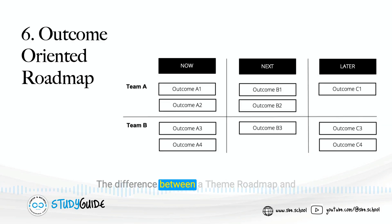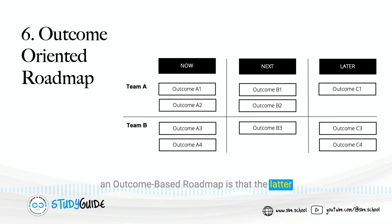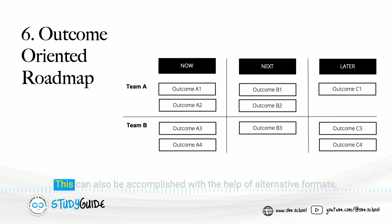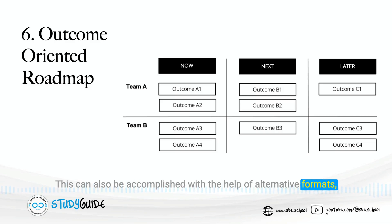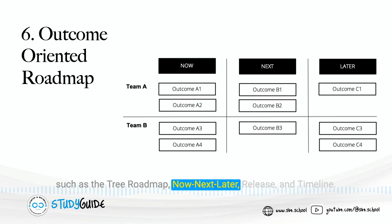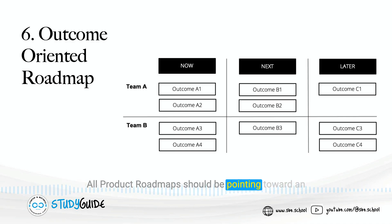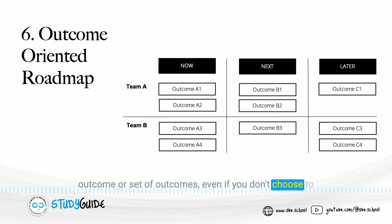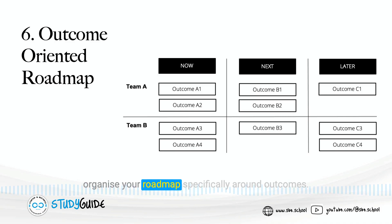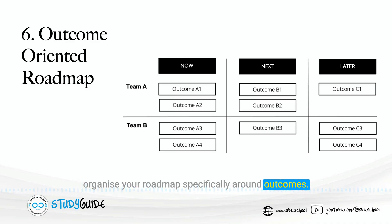The difference between a theme roadmap and an outcome-based roadmap is that the latter centers on the final product rather than the process. This can also be accomplished with the help of alternative formats such as the tree roadmap, now-next-later, release, and timeline. All product roadmaps should be pointing toward an outcome or set of outcomes, even if you don't choose to organize your roadmap specifically around outcomes.